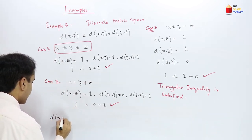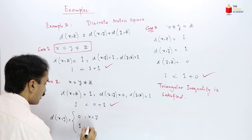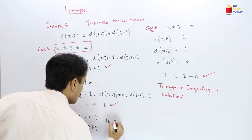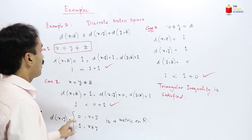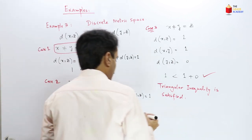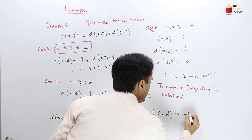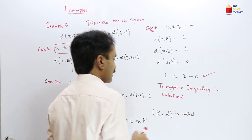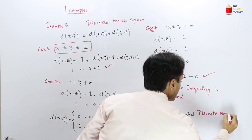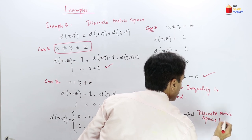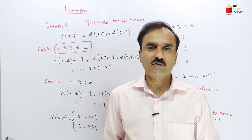Hence d(x,y), defined as 0 for x = y and 1 for x ≠ y, is a metric on ℝ. This metric is called the discrete metric, and the set of real numbers together with this metric is called a discrete metric space. These were some of the examples of metric spaces.